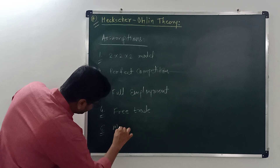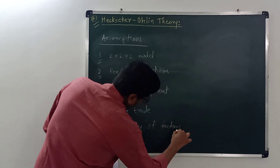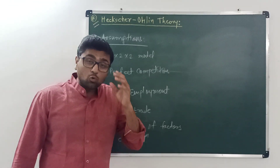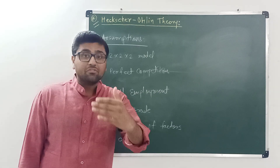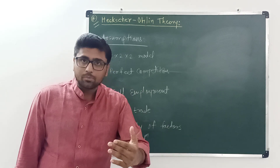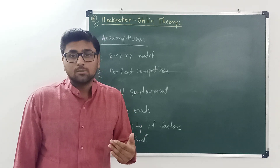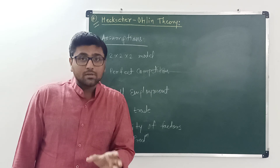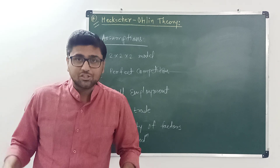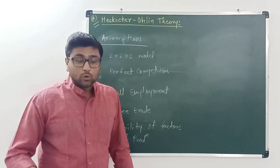The sixth assumption is mobility of factors of production. The two factors of production are completely mobile within a nation, but they cannot move from one nation to another. For example, a laborer can move from Ahmedabad to Mumbai or from Ahmedabad to Punjab, but that laborer cannot move from Ahmedabad to London. So there is complete mobility within the nation but complete immobility between nations.